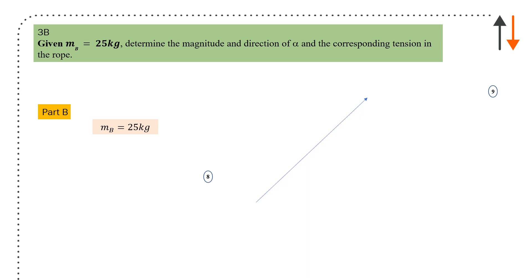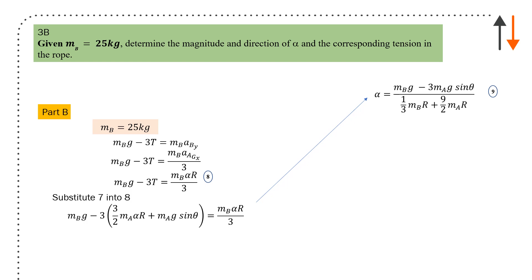Given for the second part: mass B equals 25 kilos. Determine the magnitude of acceleration alpha and the corresponding tension in the rope. Mass of B is given, you have all the terms from the previous part. Substitute in and you get alpha, which is equal to a ratio between the two masses and the distances—essentially the torques. From that, you get alpha equals 1.3 rads per second squared and tension equals 80.5 newtons.